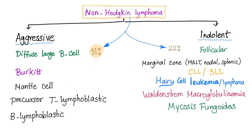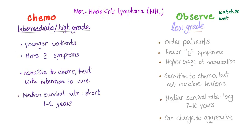As you know, non-Hodgkin's lymphoma can be aggressive or indolent. Aggressive types include diffuse large B-cell lymphoma, which is today's topic. Aggressive non-Hodgkin's lymphoma is treated with chemotherapy, while indolent non-Hodgkin's lymphoma is managed by observation or watch and wait.